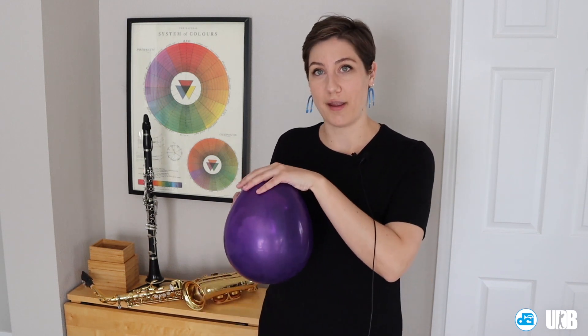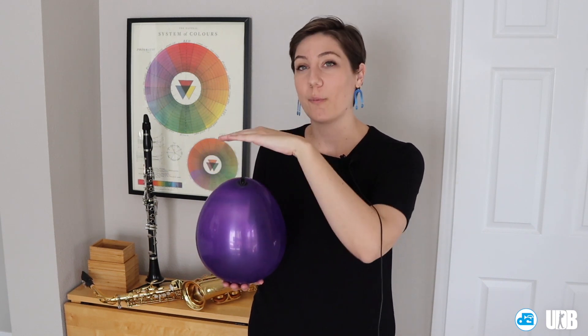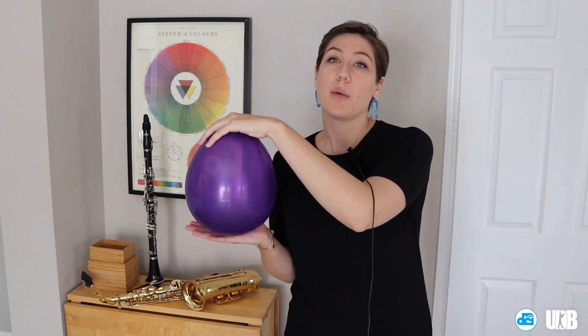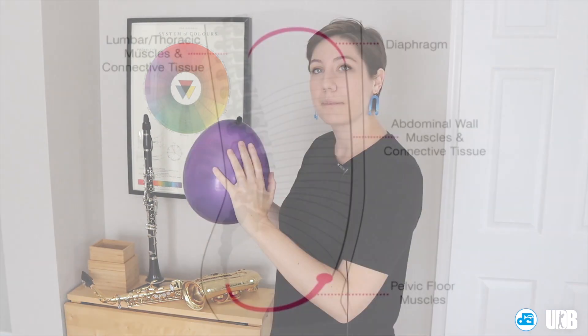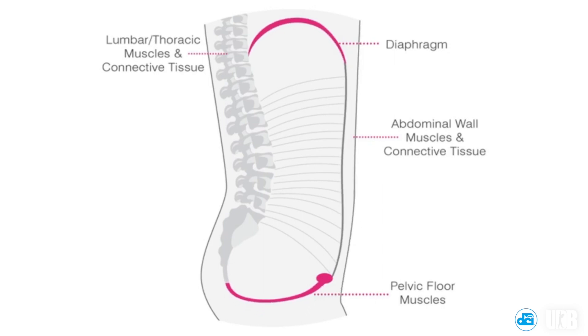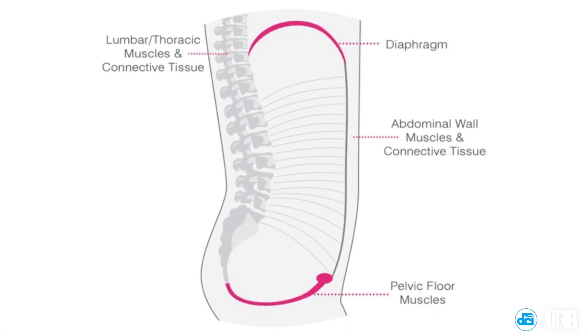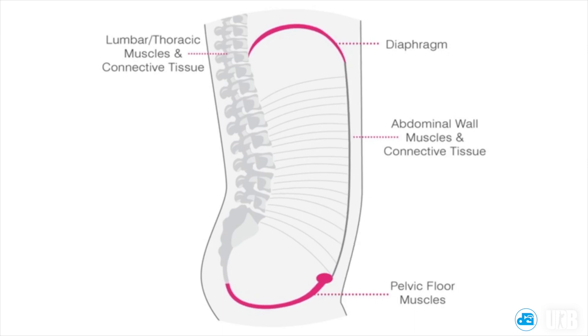In the breathing process, we of course use the lungs. We also use the diaphragm, which is usually addressed by itself, but it's part of what we call the abdominal canister, which will be demonstrated by this balloon. We have the diaphragm, which works together with the pelvic floor, the abdominal wall in the front, and the lumbar and thoracic muscles in the back. The abdominal canister is a closed system where, as we inhale, the abdominal wall and the lumbar and thoracic muscles expand outward, and the pelvic floor and the diaphragm expand downward. This increases the interabdominal pressure within the canister.